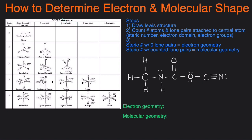First of all, we need a VSEPR table, so either you have to be given this or you will have to memorize it for questions or your exam. The steps are to draw the Lewis structure — if you're having trouble, check out my video about a shortcut for that. Then once we have the Lewis structure, we're going to determine the steric number. Let's move on to the examples and go through the steps as we work through them.